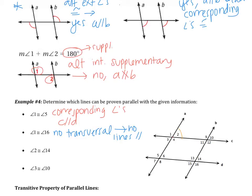Angles 2 and 14: angle 2 touches lines A and C, while angle 14 touches lines B and D. There is no common line that both angles touch, meaning there is no transversal. If there is no transversal, then we cannot prove that any lines are parallel. There could be lines parallel, but we can't prove any.